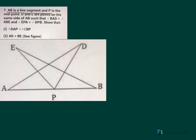AB is a line segment. P is the midpoint. D and E are points on side AB such that angle BAD equals angle ABE, and angle EPA equals angle DPB. Show the following. Let's mark what is given.